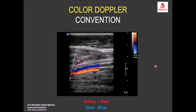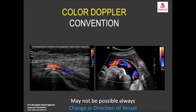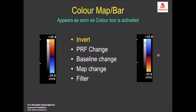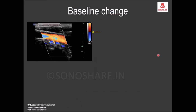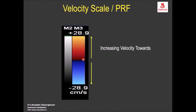The popliteal artery at the knee changes course, so flow appears towards the transducer in one segment. You can change the filter and wall filter settings. The baseline can be adjusted — for example, using one half of the scale for positive shift, representing flow towards the transducer, and the other half for negative shift, representing flow away from the transducer.